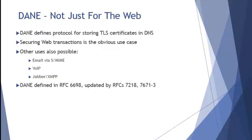DANE is not just for the web — it can be used for any type of TLS connection. Wherever you're using TLS: web connections, obviously, but also for email, Voice over IP, Jabber, and XMPP. DANE is specified originally in RFC 6698, updated by RFC 7218, with some additional applications specified in RFCs 7671 through 7673. Hopefully, DANE can help you secure your connections by publishing corroborating TLS information in the DNS.